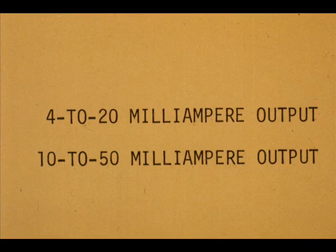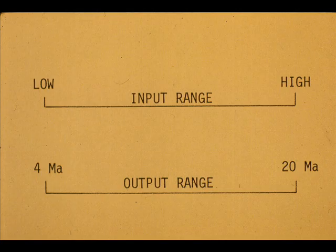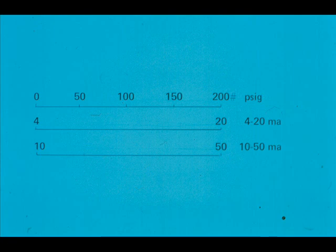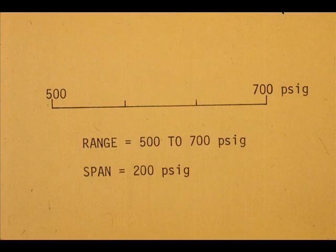Our two transmitter output ranges give two fixed reference points for any input range. For the 4 to 20 milliamp output, 4 milliamps represents the low end of the input range and 20 milliamps represents the high end. Similarly, for the 10 to 50 output signal, 10 milliamperes represents the low end of the input range and 50 milliamps represents the high end. For a zero to 200 pound pressure transmitter, we have these known calibration points for the two output ranges.